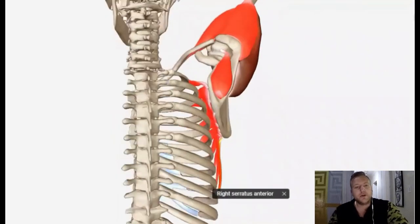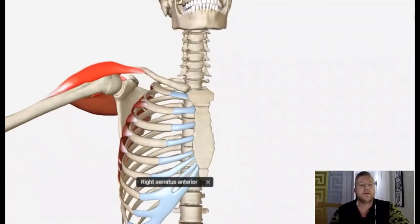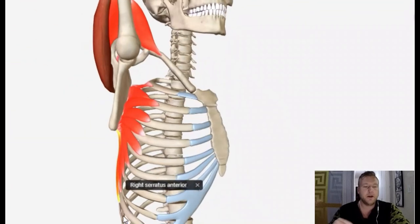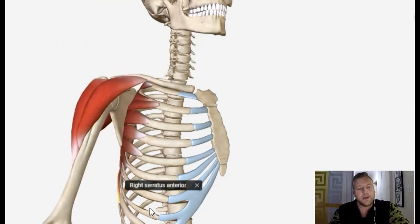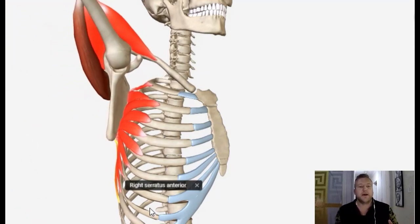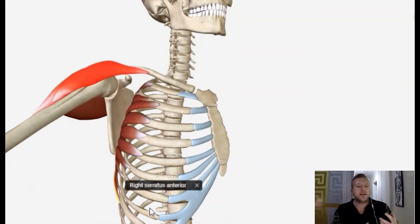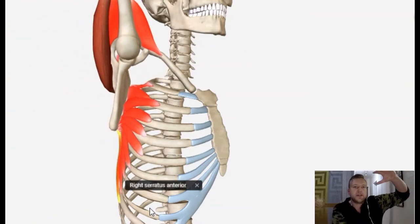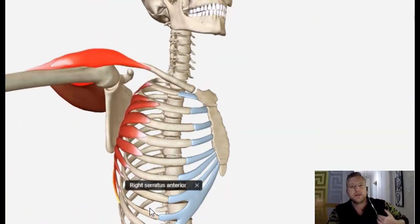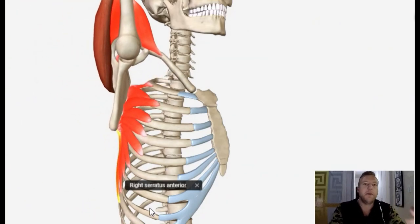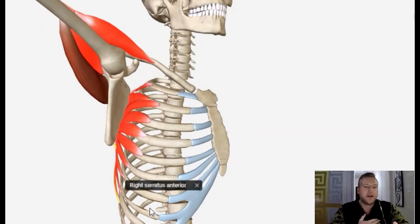I do have a video on the serratus anterior, I'll link it down below. I've got videos on the wing scapula that I'll link and you can work on these muscles now. You can visualize it as you're watching the movement, you can see where that muscle is, and the more you know about the anatomy, the more you know where these muscles sit. You can go back to my other videos.